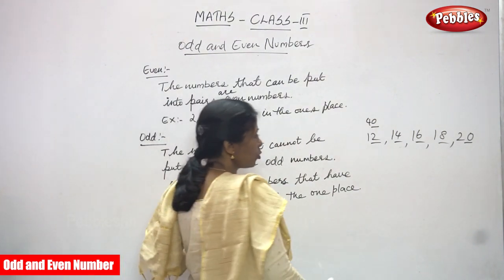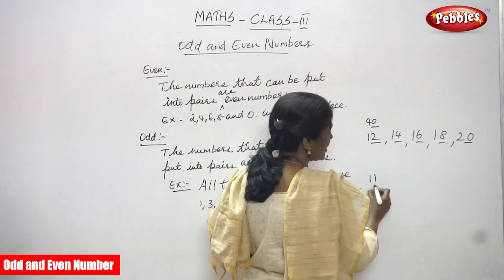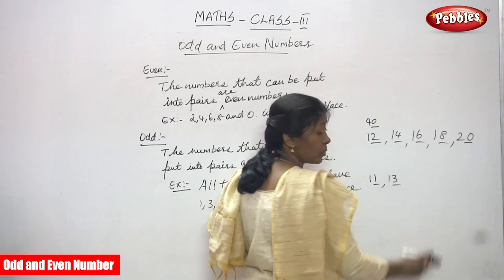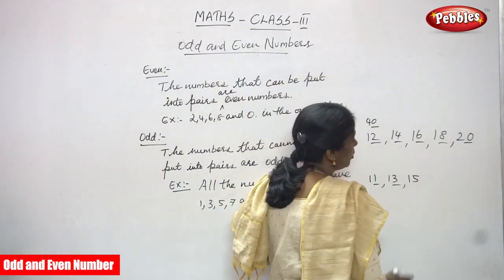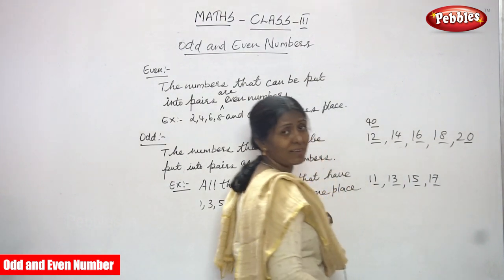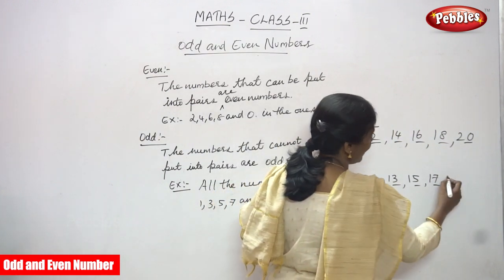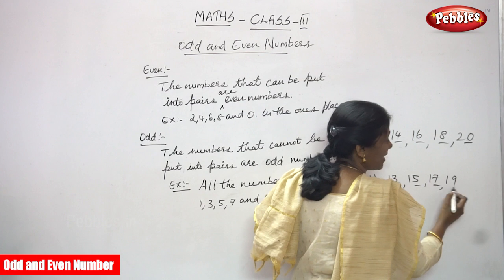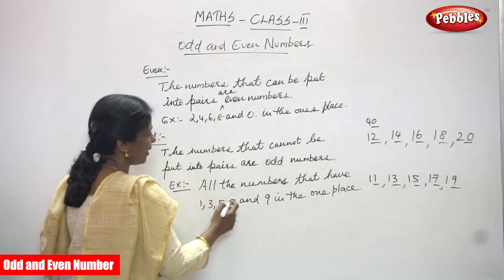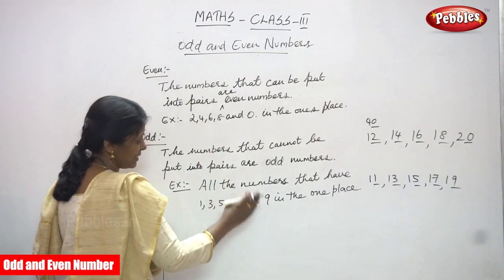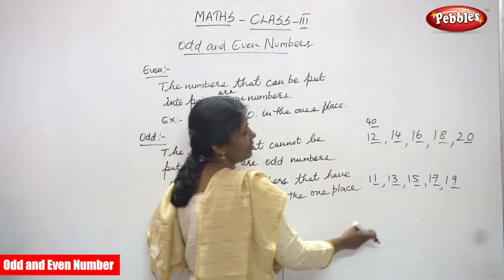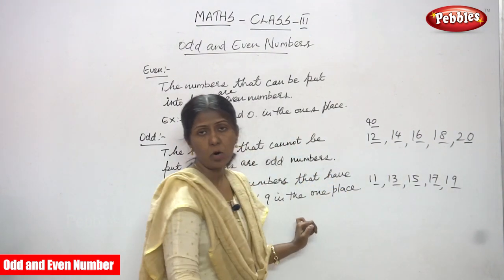All the numbers that have 1, 3, 5, 7, and 9 in the ones place are odd numbers. For example, 11 — look at the ones digit, it ends with 1, so it is an odd number. 13 ends with 3 — odd number. 15 ends with 5 — odd number. 17 ends with 7 — odd number. 19 ends with 9 — odd number. So 1, 3, 5, 7, and 9 in the ones place means the number is odd.